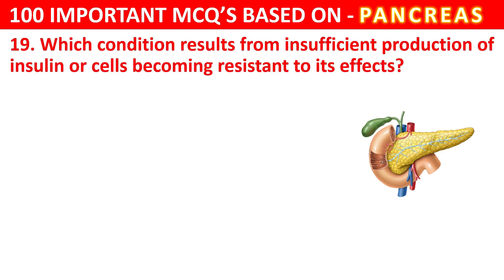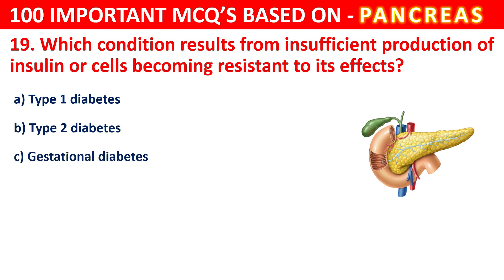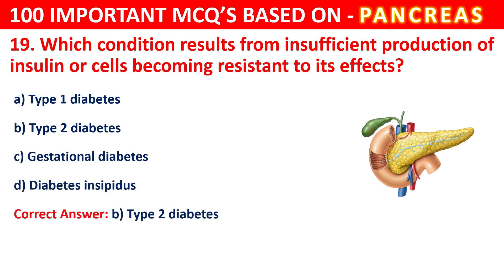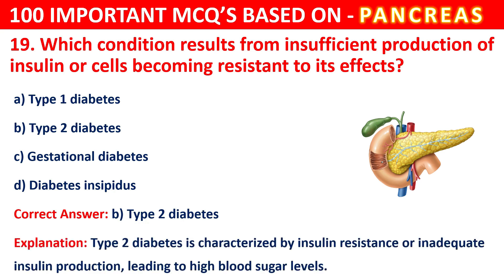Question 19. Which condition results from insufficient production of insulin or cells becoming resistant to its effects? Your options are Type 1 Diabetes, Type 2 Diabetes, Gestational Diabetes, or Diabetes NCPD. The correct answer is B, that is Type 2 Diabetes. Type 2 Diabetes is characterized by insulin resistance or inadequate insulin production, leading to high blood sugar levels.